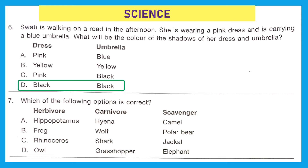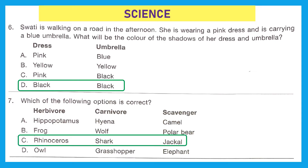Question 7: Which of the following options is correct? There are three categories — herbivores, carnivores, and scavengers. The correct option is C: rhinoceros are herbivores, shark is a carnivore, and jackal is a scavenger.